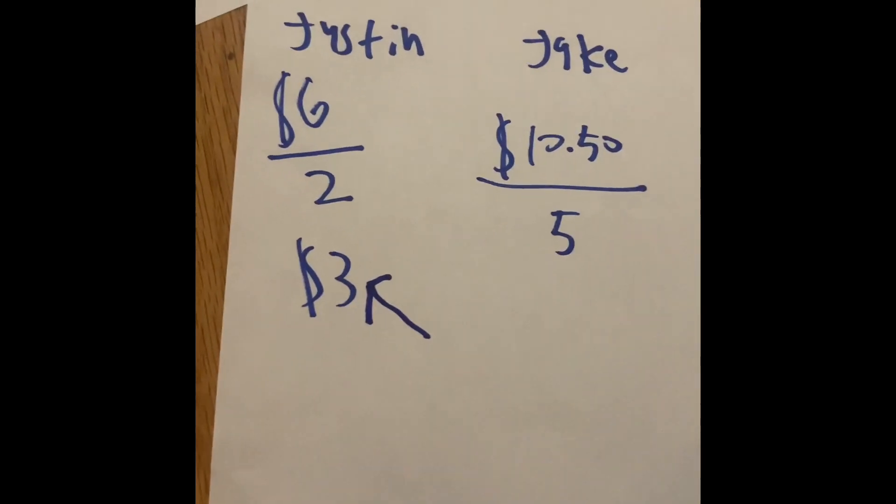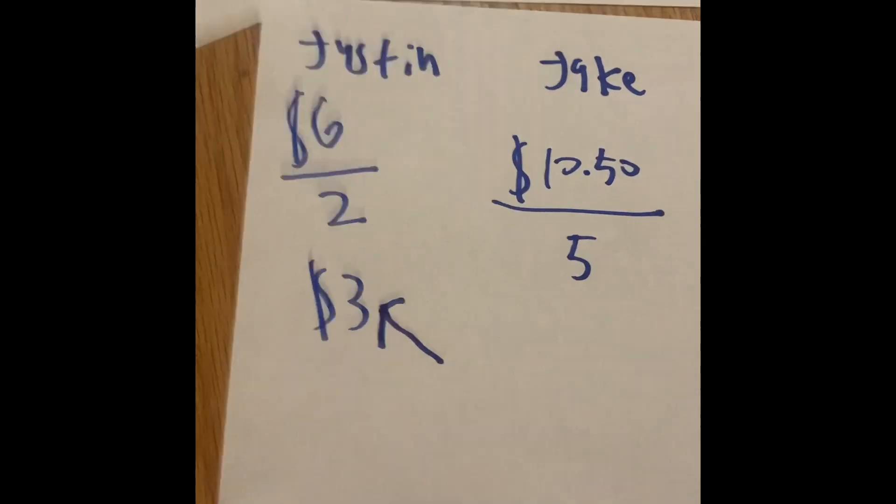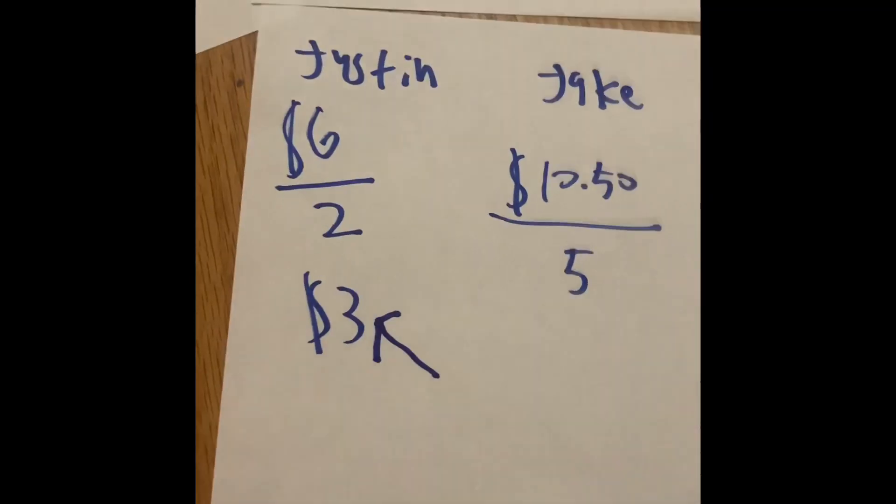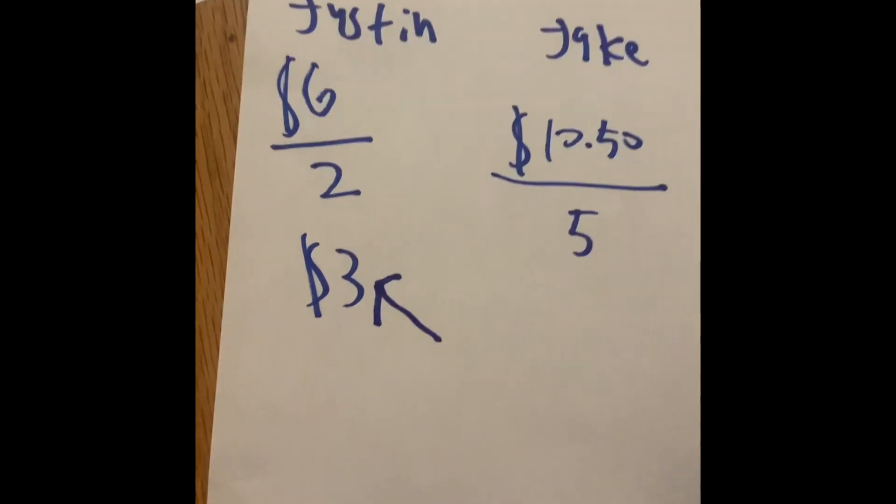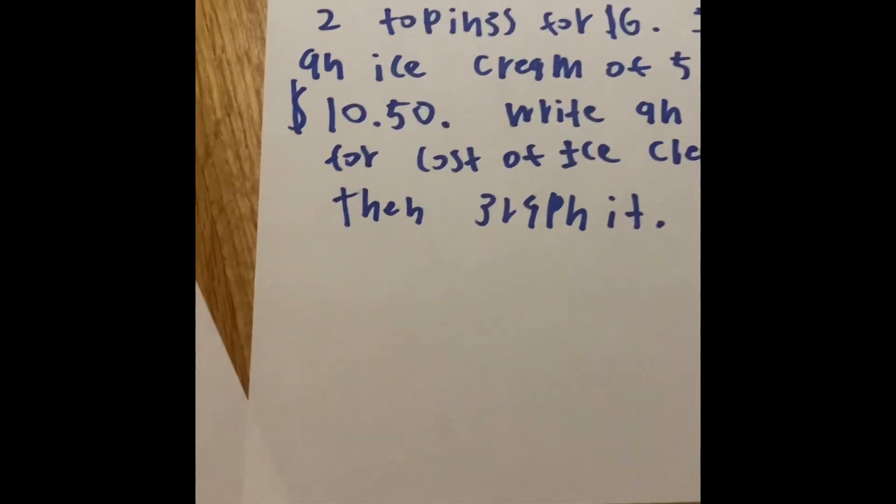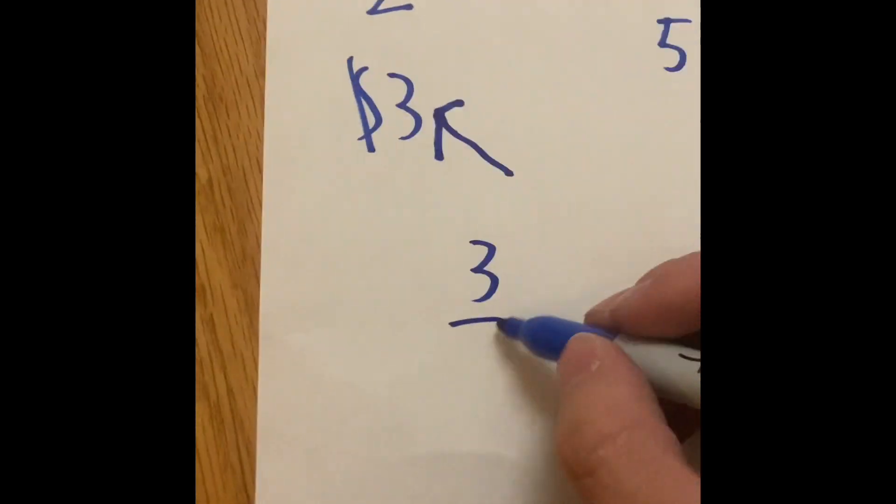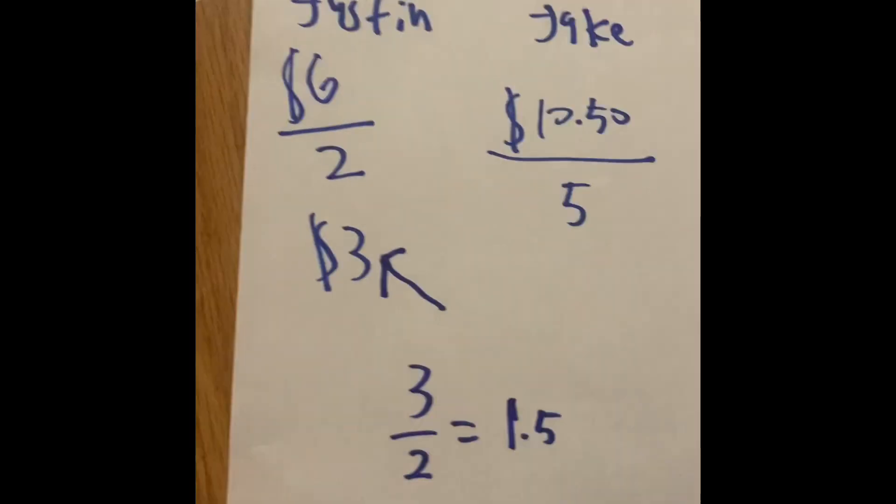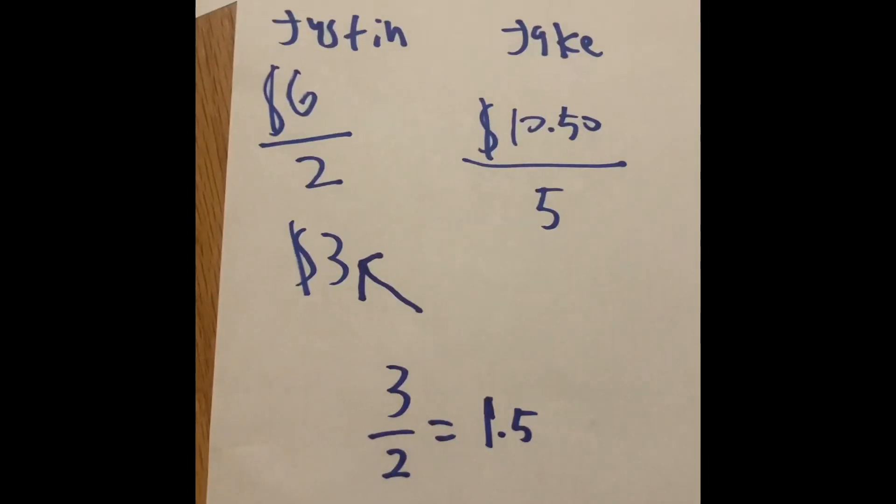And we also know that if you have six and two, but we have three, but the total is six, then there's got to be some three difference. But Justin bought two toppings for the ice cream. So, three divided by two equals 1.5. And that would also apply for Jake as well.